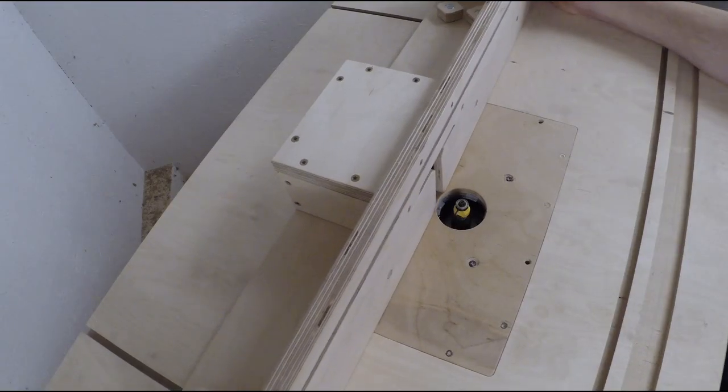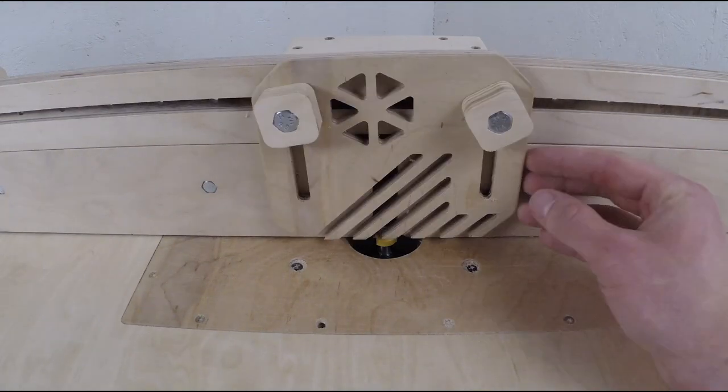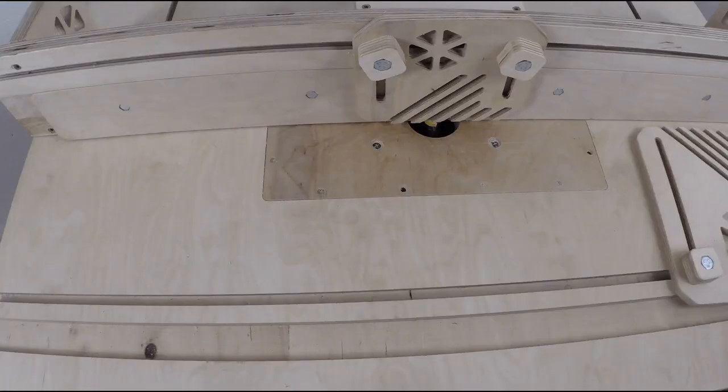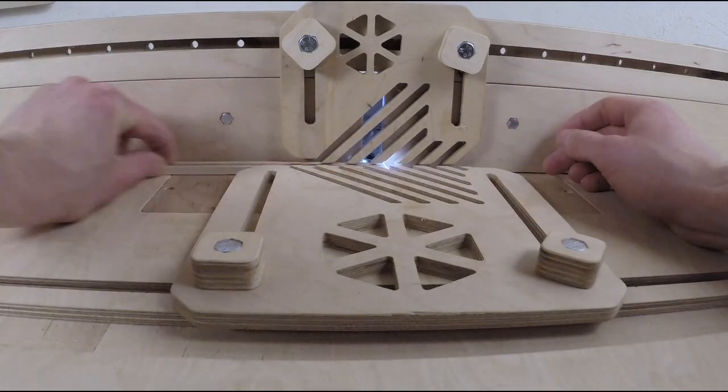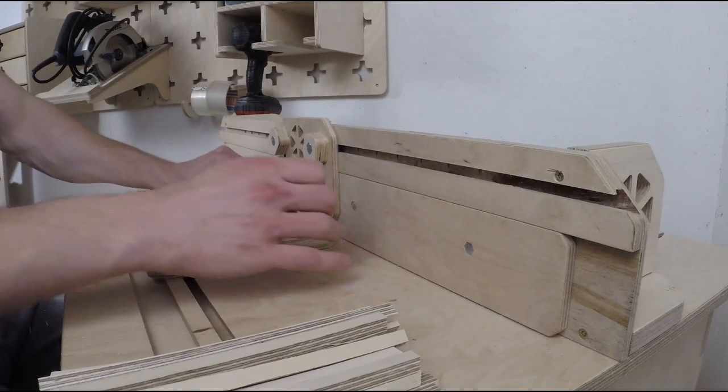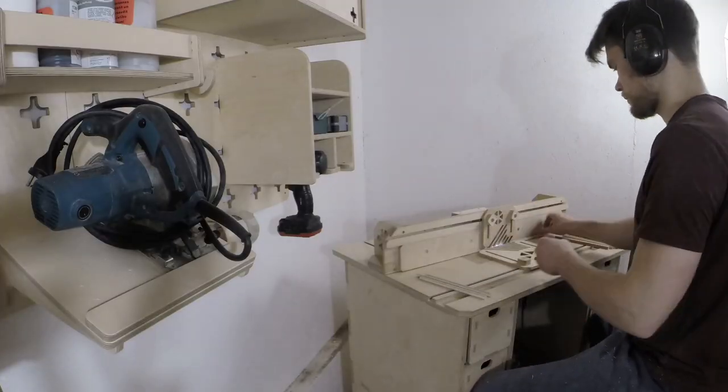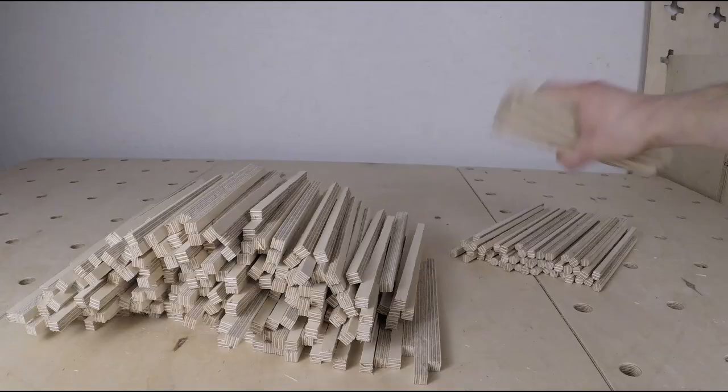So I installed the fence on the router table and attached the anti-kickback components at the fence and on the work table. The anti-kickback attachment not only made the trimming process safer, but it also ensured that each of the edges got trimmed nicely.